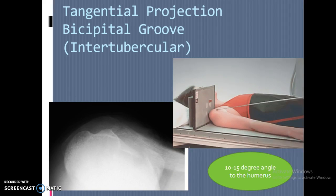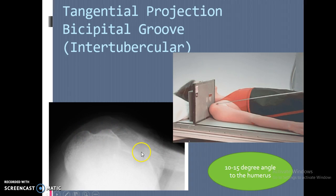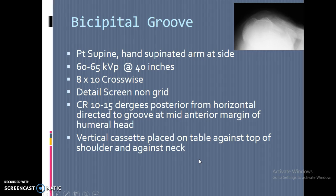The bicipital groove view is occasionally ordered by a doctor who wants to see the space between the lesser and greater tubercle. It's very rarely ordered. All you basically do is lie the patient on their back, angle down about 10 to 15 degrees, and place a sponge and cassette accordingly.